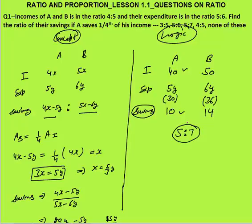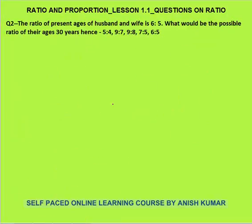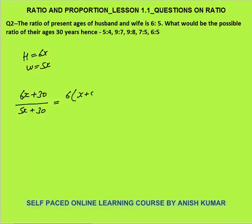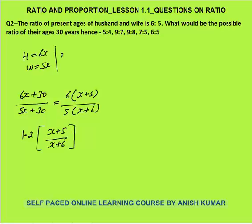Second question: the ratio of the present age of husband and wife is 6:5. Assume husband's age is 6x and wife's age is 5x. What would be the possible ratio of their ages 30 years hence? Husband's age would be 6x + 30, wife's age would be 5x + 30. Taking 6 common from numerator and 5 common from denominator, this becomes (6/5) × (x + 5)/(x + 6), where 6/5 = 1.2.